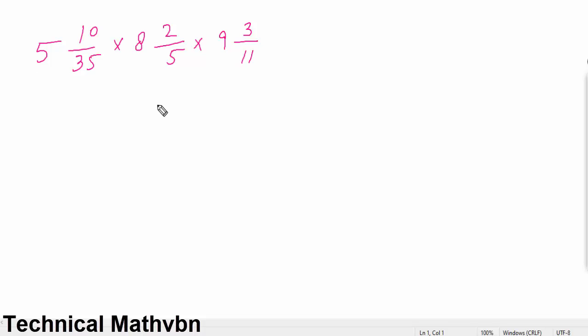Now what will we do? Very easily, we will try to convert the mixed fraction into a simple fraction. It's very easy - multiply 5 by 35, that will make it simple.